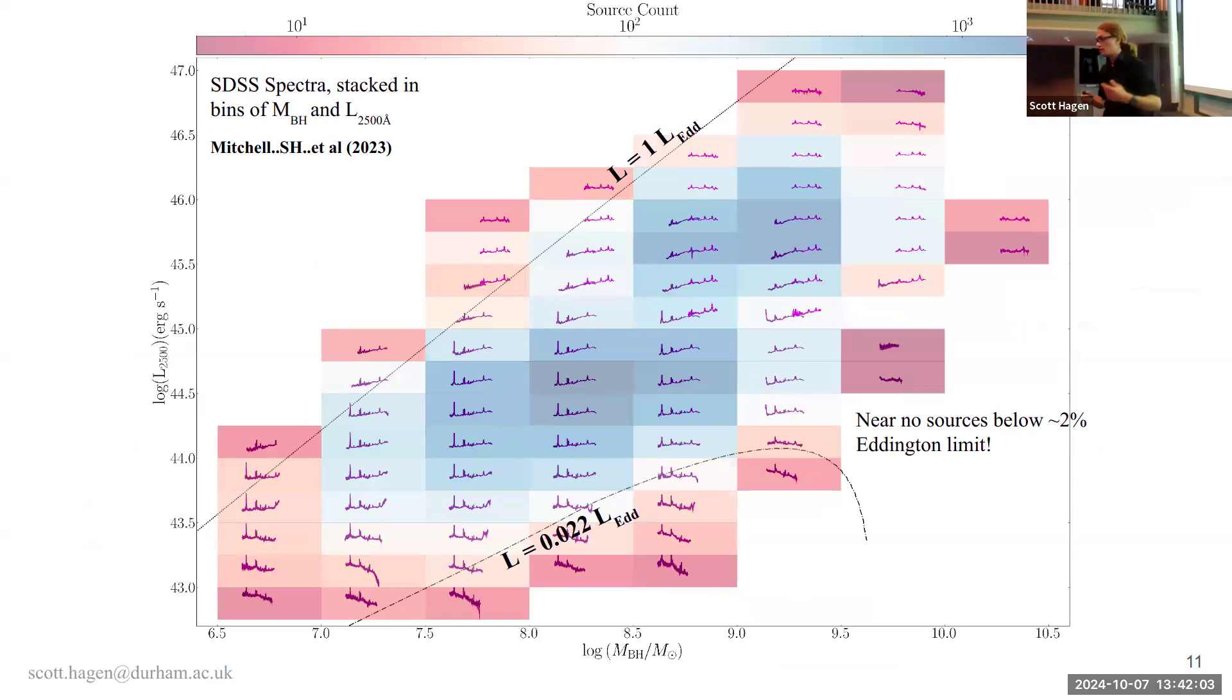So one of the things you can do, and what the Mitchell did, is take all of SDSS, and plot it in terms of mass and monochromatic luminosity, optical monochromatic luminosity, more or less the accretion state. And so then you can tell how much power you have available. And then you ask, okay, for how many sources do I have in each bin? And you'll see the blue bins, these have thousands of sources in them. But they're all above, like, a few percent of Eddington. When you go to about 2 percent of Eddington, the number of sources drops off dramatically. There's almost nothing.